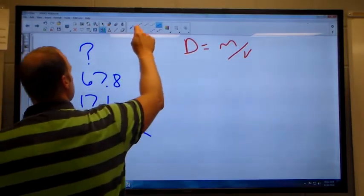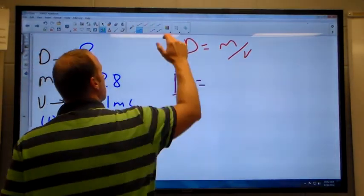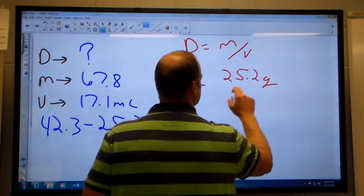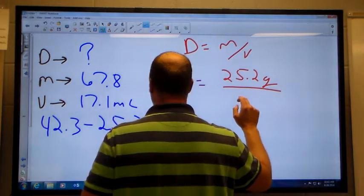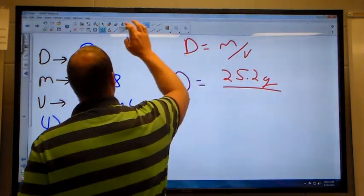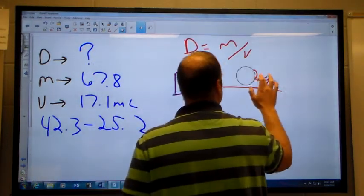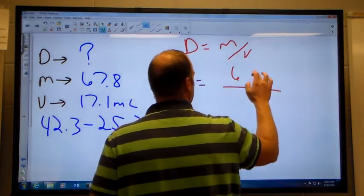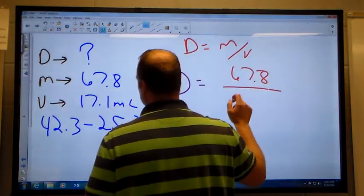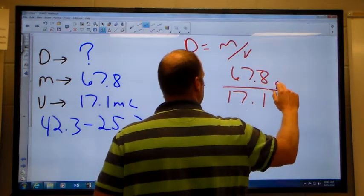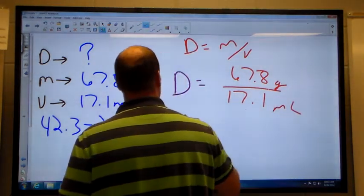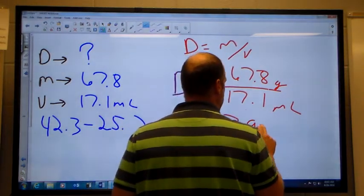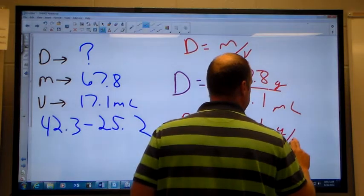Now plug it in. Density is my unknown. 25.2. Grams. Divided by. No. Get that. Sorry. That would be 67.8. Divided by 17.1 grams per milliliter. Does anybody have that? 3.96. Huh? 3.96 grams per milliliter. 3.96 grams per milliliter.